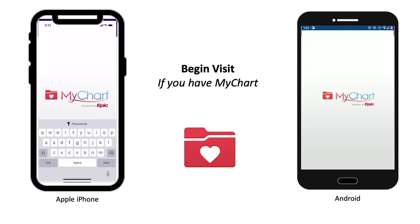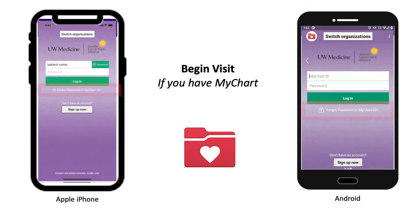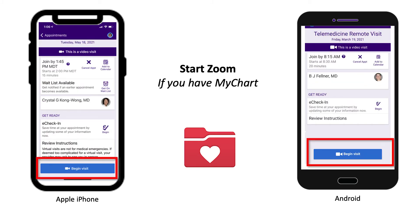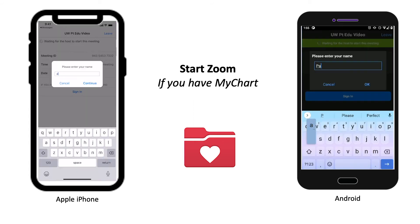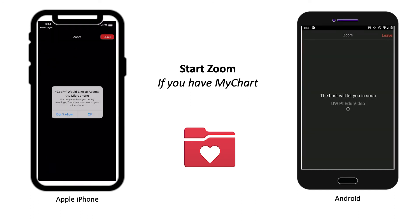If you have MyChart, go to the MyChart app and log in. If you forgot your username or password, you can click on the link Forgot Password and MyChart ID to reset your account. Select the option to Begin Your Video Visit, then tap Begin Visit. This will start Zoom. Enter your first and last name. It may take a few minutes for the provider to join, so please stay online in the waiting room.